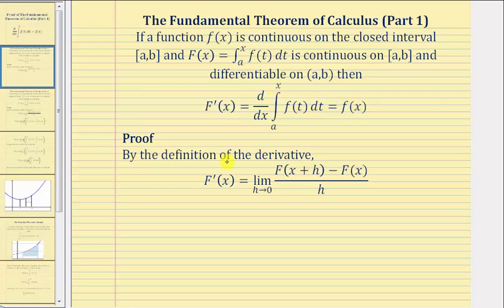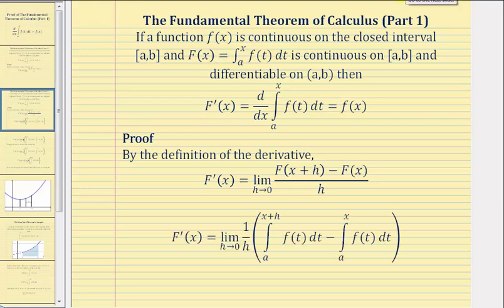To begin our proof, we'll use the definition of the derivative for big F prime of x, which equals the limit as h approaches zero of the difference quotient for big F. So the next step, we're going to factor out one over h from the fraction and then write big F of the quantity x plus h and big F of x as definite integrals. We have the limit as h approaches zero of one over h times the quantity — big F of x plus h equals this definite integral where we substitute x plus h for x — and then minus big F of x, which equals this definite integral.